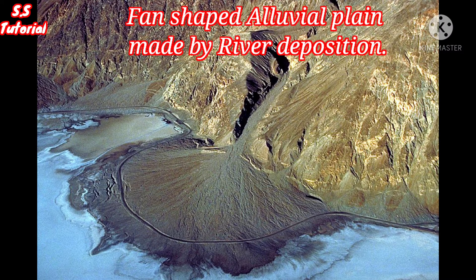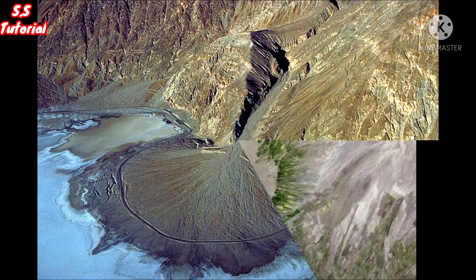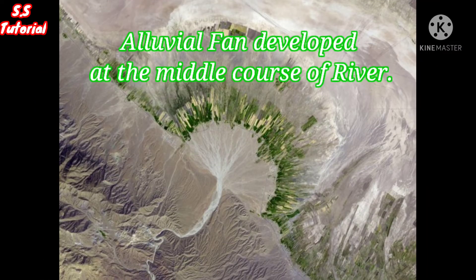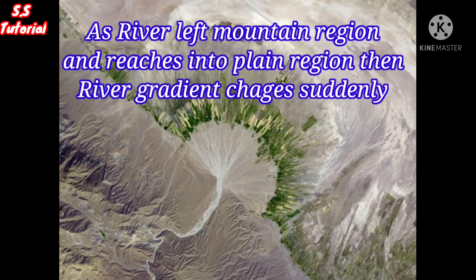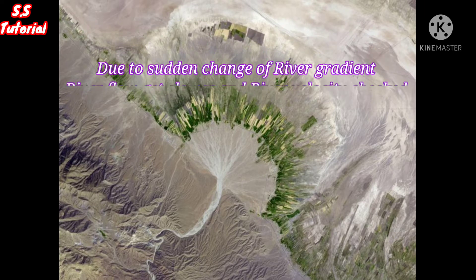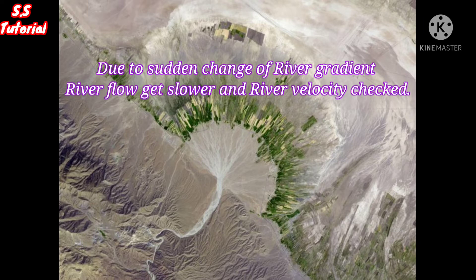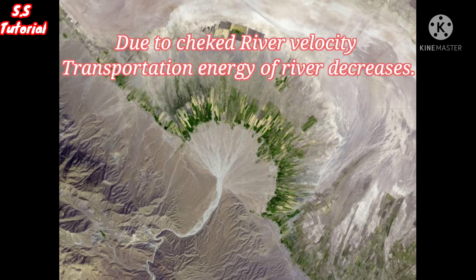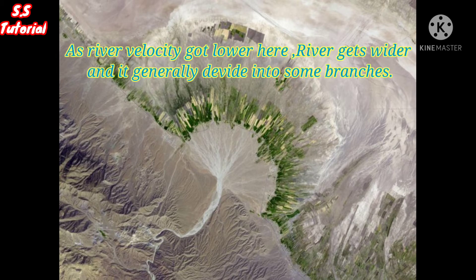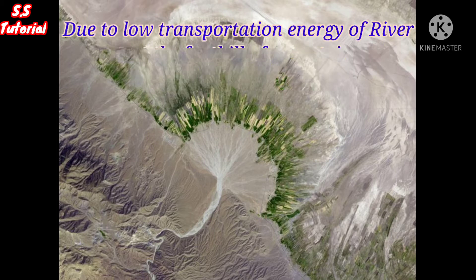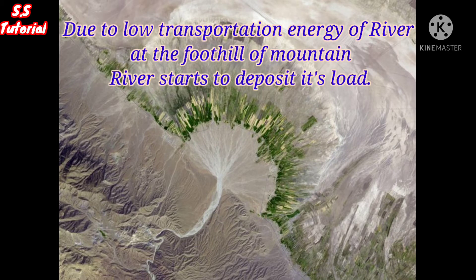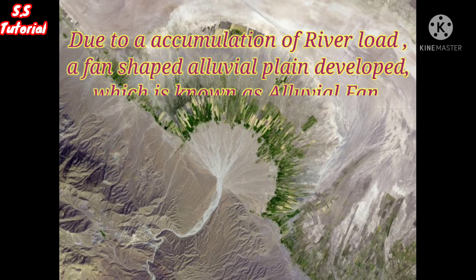Alluvial fan is nothing but a fan-shaped alluvial plane made by river deposition in the middle course of a river. It is one of the most characteristic landforms made by a river. In the beginning of the middle course, when the river leaves the mountain region and reaches into the plain, due to a sudden change of river gradient, the river flows very slowly. So the transportation energy of the river decreases as river velocity is checked. The river gets wider and much of the river load is deposited at the foothill of the mountain region where the river gradient suddenly changes, developing a fan-type alluvial plane known as an alluvial fan.